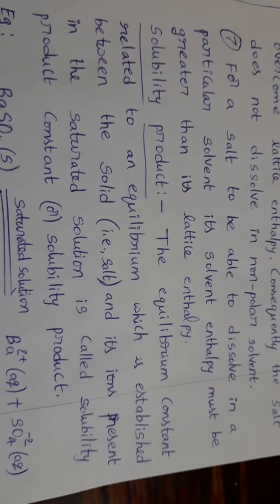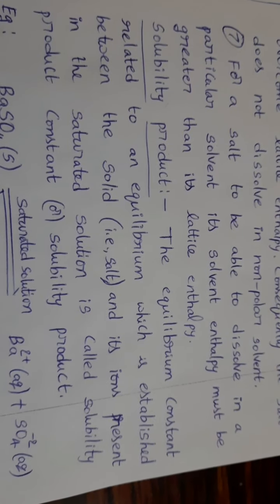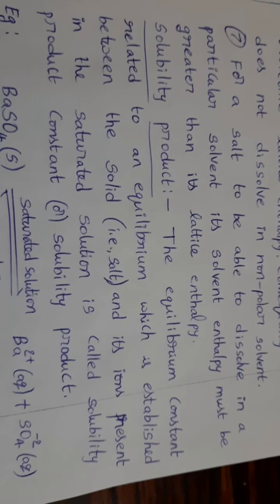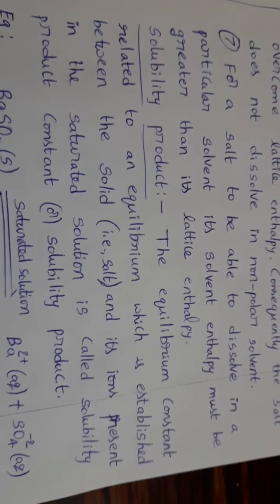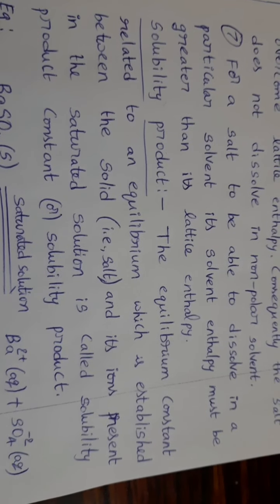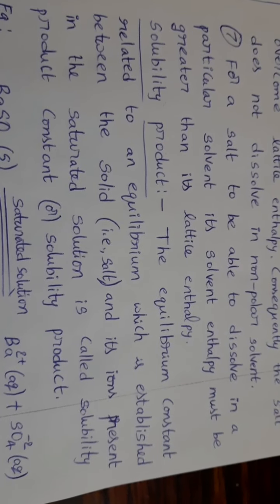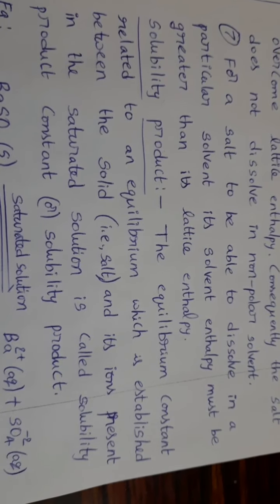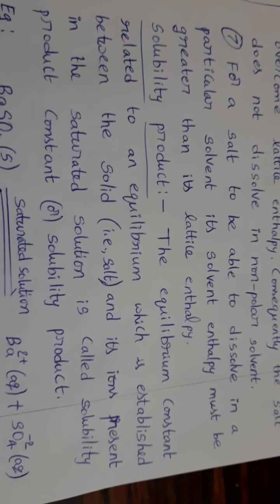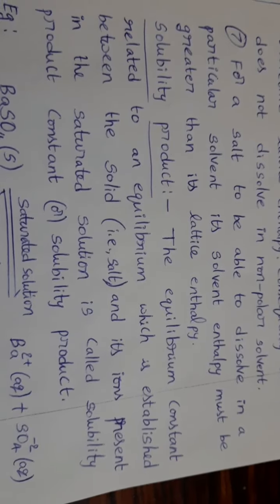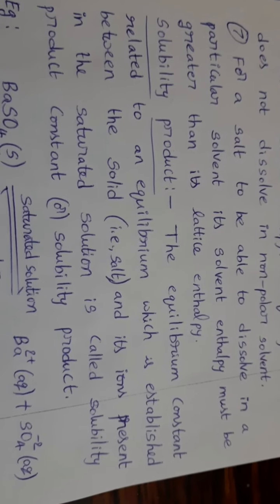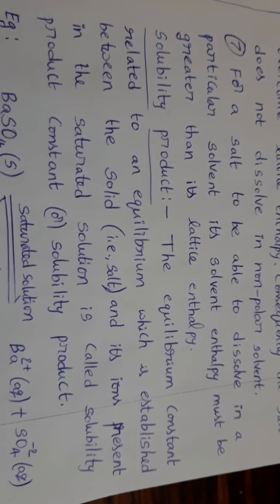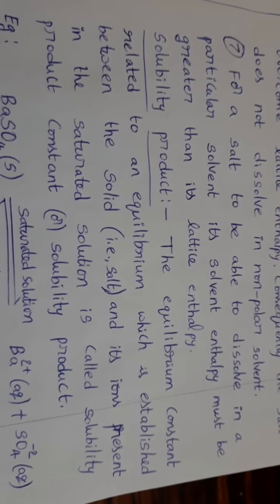Then we can get two types of phases: one is the solid form of the salt, and the other is its ions in the saturated solution. Between these two, equilibrium is established. The equilibrium constant related to this is called the solubility product or solubility product constant. The equilibrium constant related to an equilibrium established between the solid form of the salt and its ions present in the saturated solution is called the solubility product.